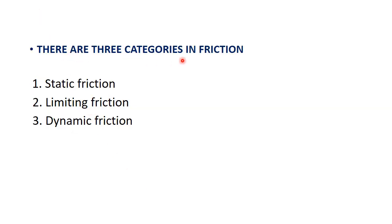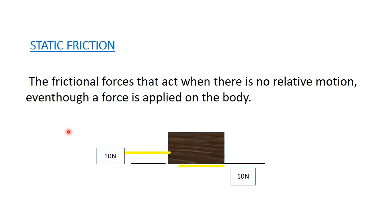There are three categories of friction: static friction, limiting friction, and dynamic friction. Static friction is the frictional force that acts when there is no relative motion, even though a force is applied on the body.